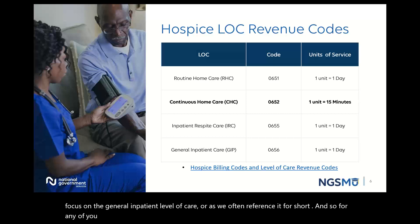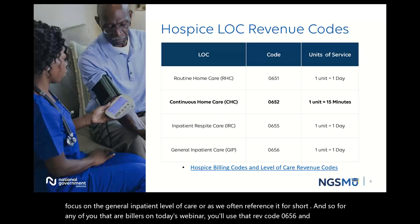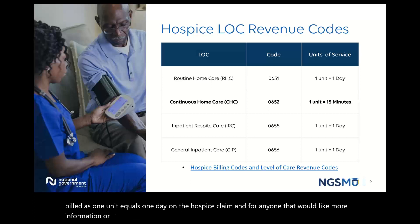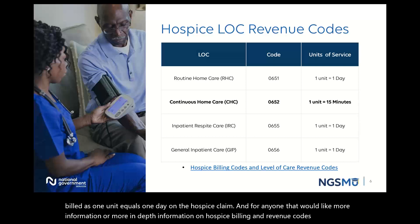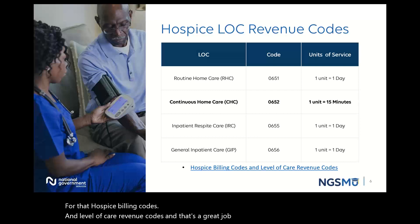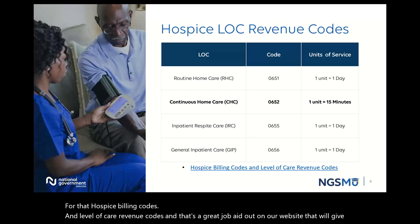For any of you that are billers on today's webinar, you'll use that rev code 0656, and it's billed as one unit equals one day on the hospice claim. For anyone that would like more in-depth information on hospice billing and revenue codes, I do have that hyperlink on the bottom of the slide for that hospice billing codes and level of care revenue codes. That's a great job aid out on our website that will give you more in-depth information on billing.